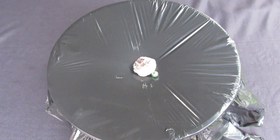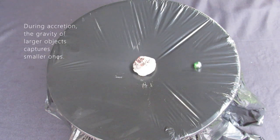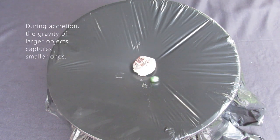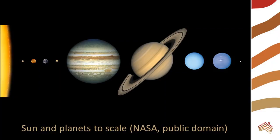You will notice that the marble ends up in the center after a few orbits. During accretion, the gravity of larger objects captures smaller ones which eventually collide with the massive object. In this way, solar systems are formed.